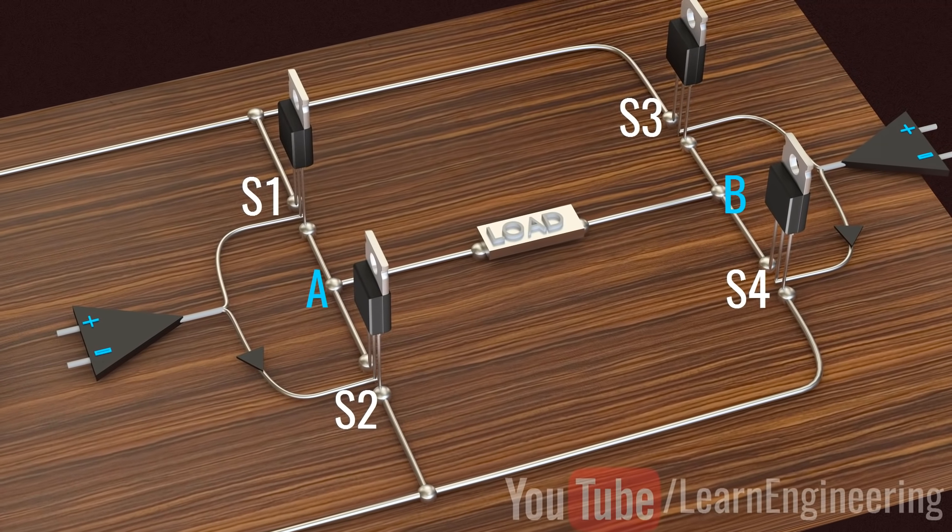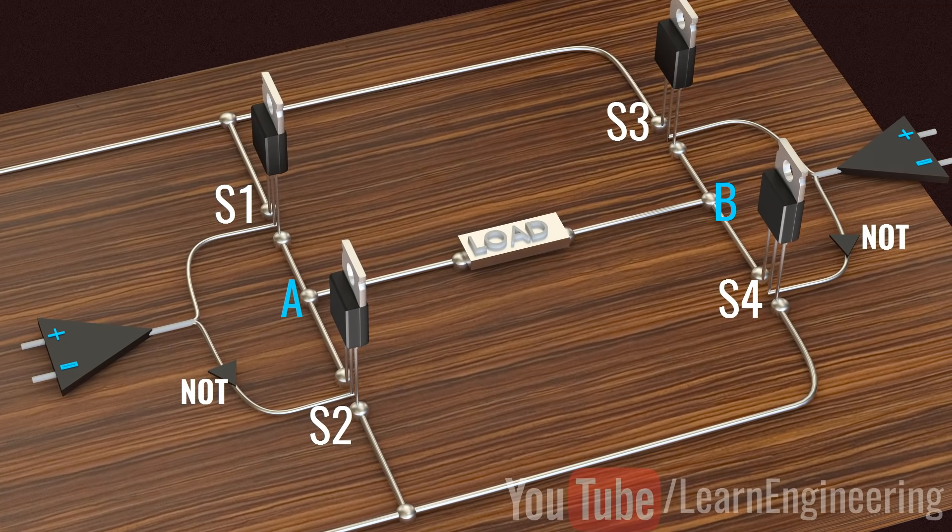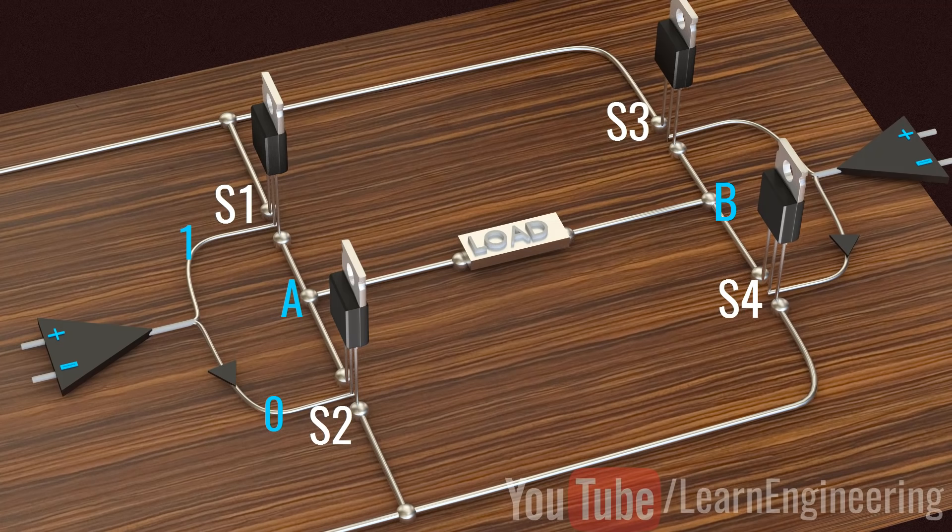You can see that one branch of comparator output is fitted with a logic NOT gate. This will make sure that when S1 is on, S2 will be off and vice versa. This also means that we can never turn on S1 and S2 at the same time which would cause the DC circuit to short circuit.